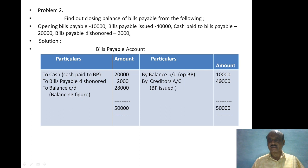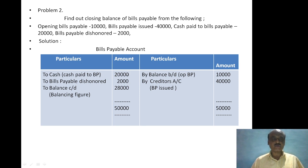Bills payable issued to creditors appears on the credit side at rupees 40,000. Adding the opening balance of bills payable of rupees 10,000 gives a total of rupees 50,000 on the credit side. After deducting cash paid rupees 20,000 and dishonored bills rupees 2,000, the closing balance of bills payable is rupees 28,000, which is the balance carried down.